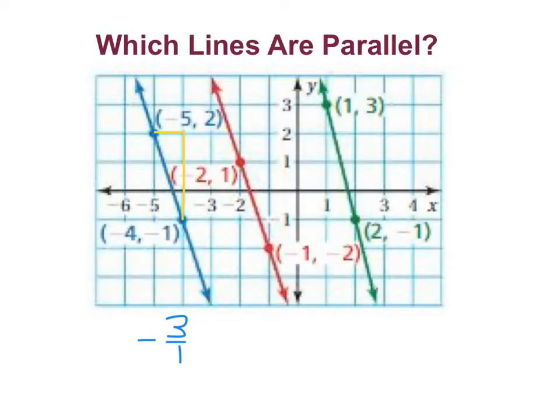And now for the red line, again I'll start at the bottom point. I rise up 1, 2, 3, and I run 1. So for the red one, my slope is 3 over 1, and it's negative.